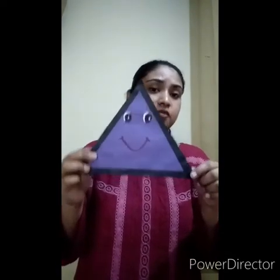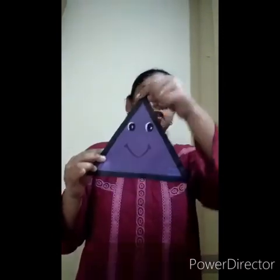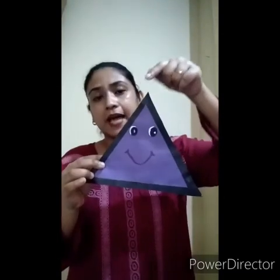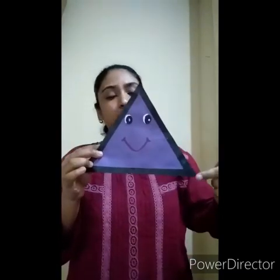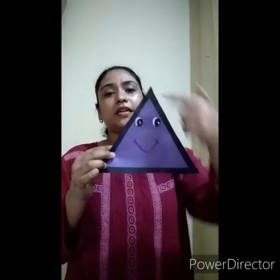Now we have the triangle. This is a triangle. A triangle has how many sides? Count: one, two, three — three sides. And how many corners? One, two, three — three corners.